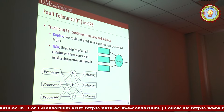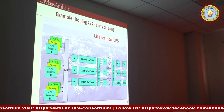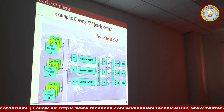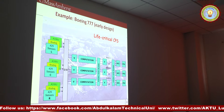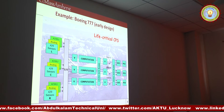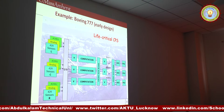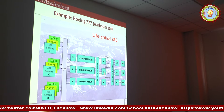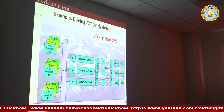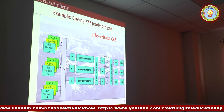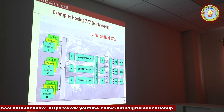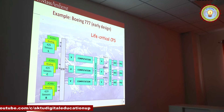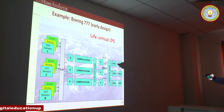Let's see an example of how this technique has been used in the early design of the Boeing 777, which is definitely a good example of a life-critical cyber-physical system. As you can see, the logic has been separated, partitioned into three sections, and you have two sets of three voters between them. In this way, you can have a faulty unit, a faulty voter, another faulty unit, another faulty voter, and still operate properly.